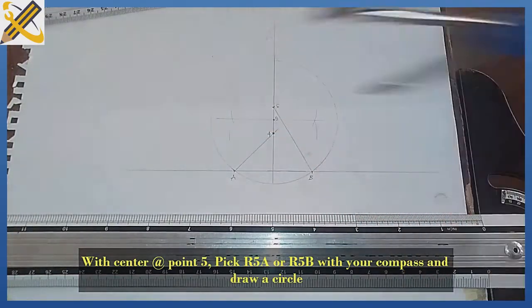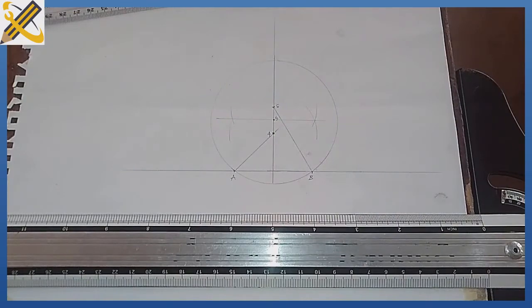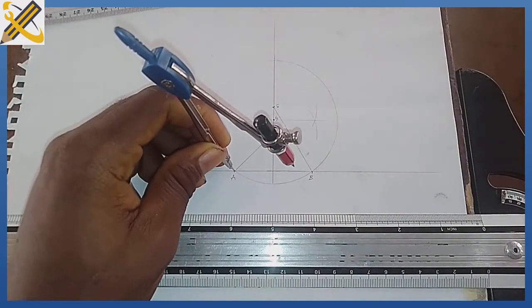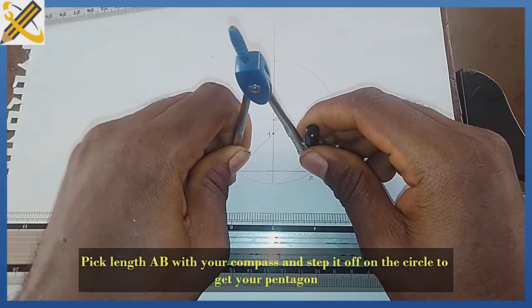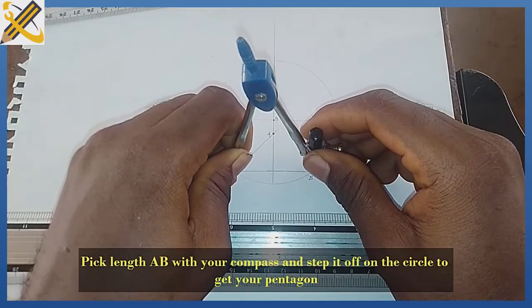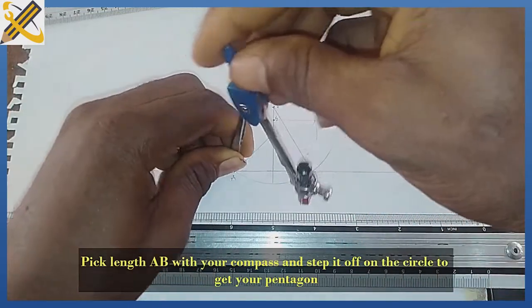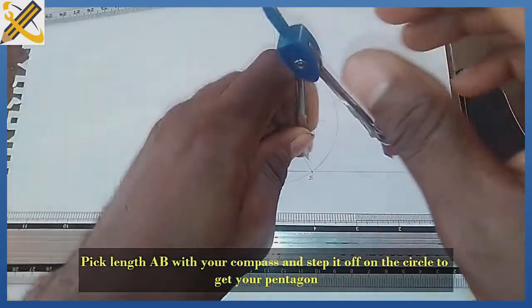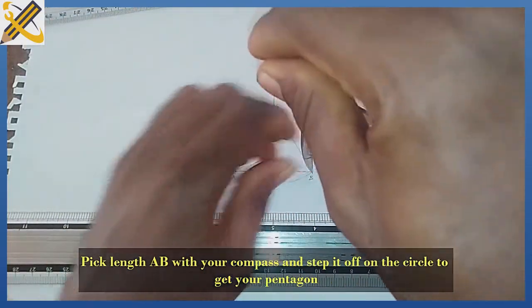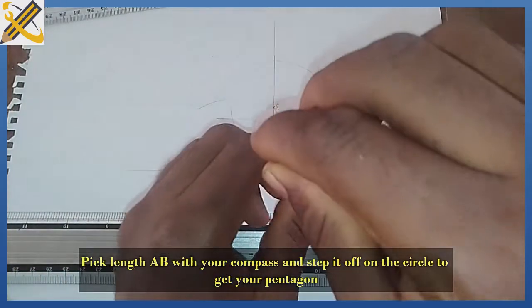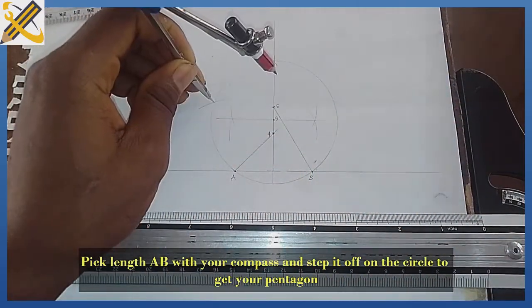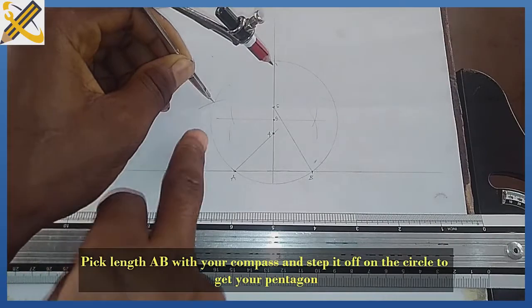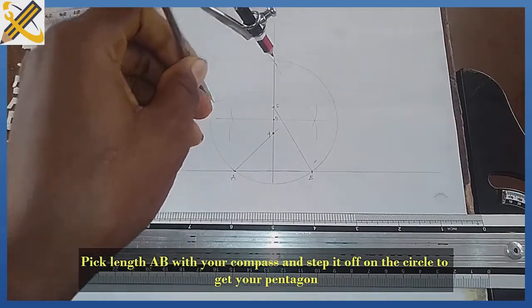After drawing the circle, I'm going to pick my compass, pick length AB with my compass, then strike it on the circle. You can see on this area also, on the point of intersection of the arc.